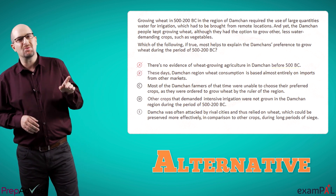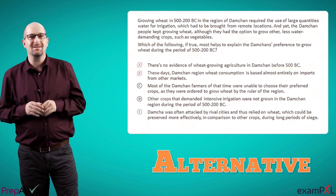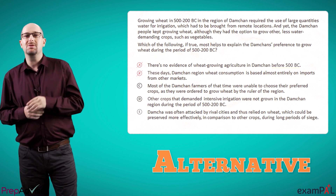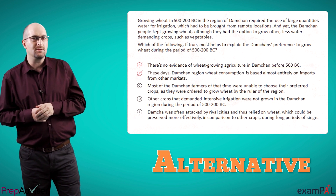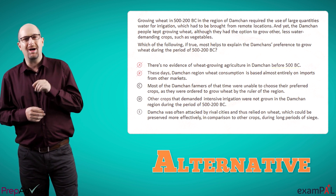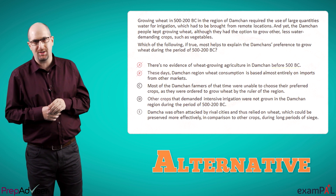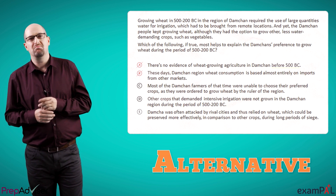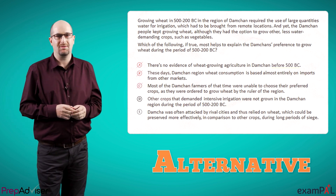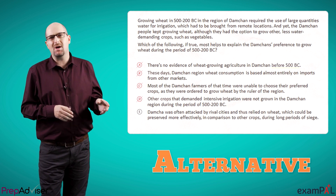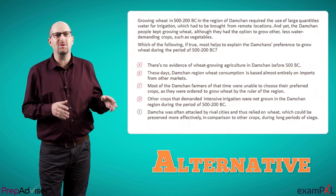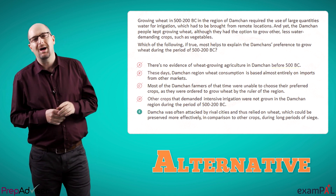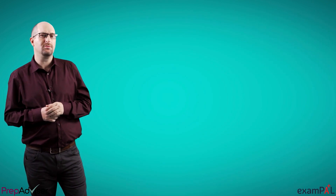Similarly, B is irrelevant because it describes something these days and not in the relevant era. C looks promising — it tells us the reason the farmers planted these crops — but wait, we're asked why the Damchan people in general made this choice, and the ruler is part of the people. Why did the ruler order this? We don't know, so it's not our answer. D doesn't help us; it describes other crops, and the fact that they weren't grown only makes the case of the wheat more mysterious. E is what we're looking for: a legitimate reason for wheat to be grown.